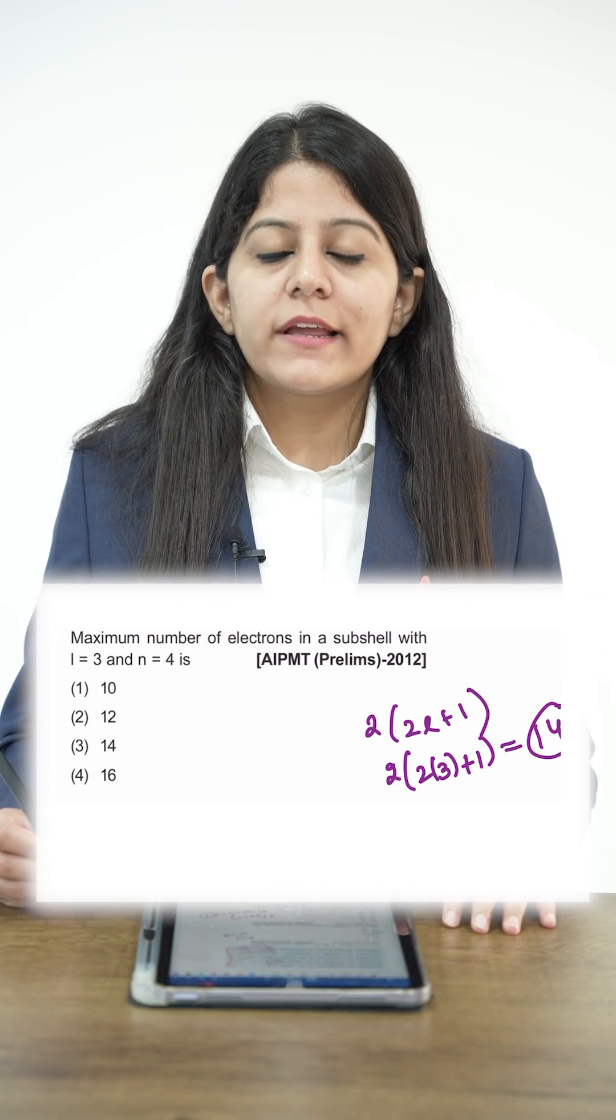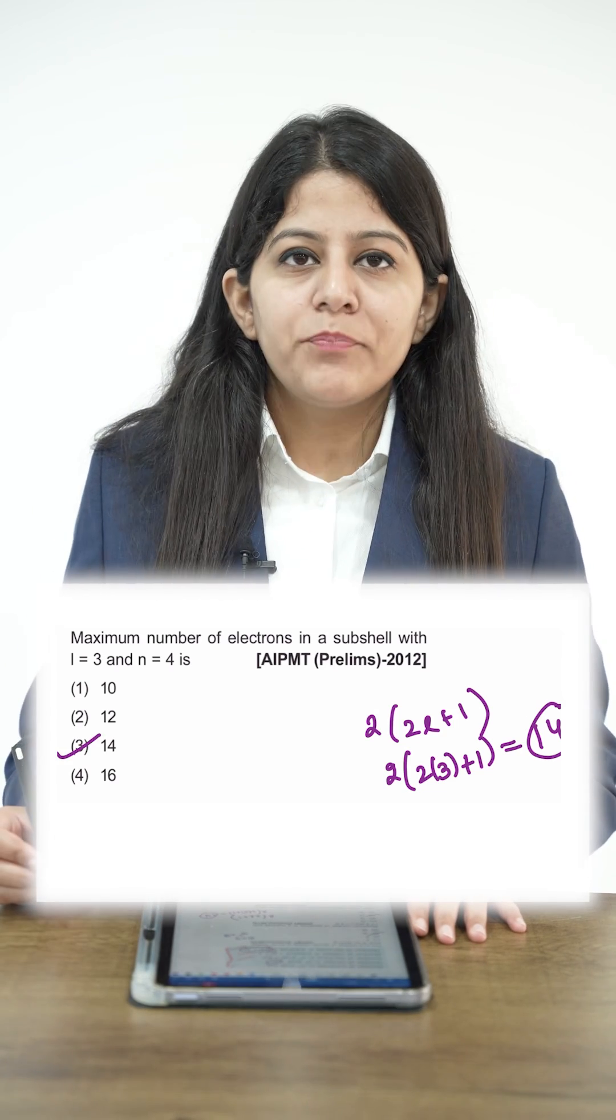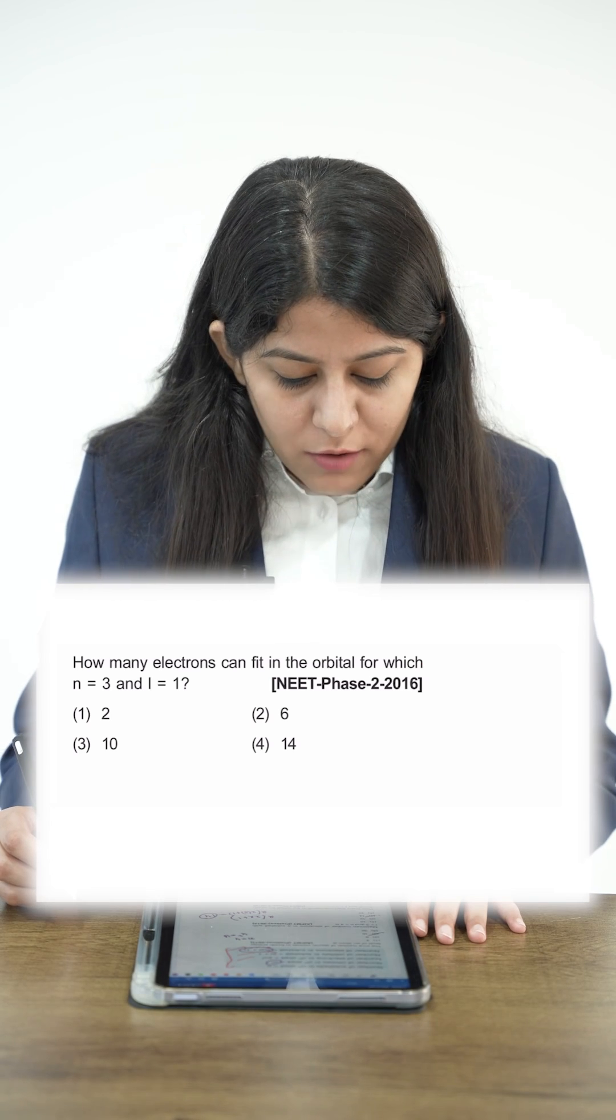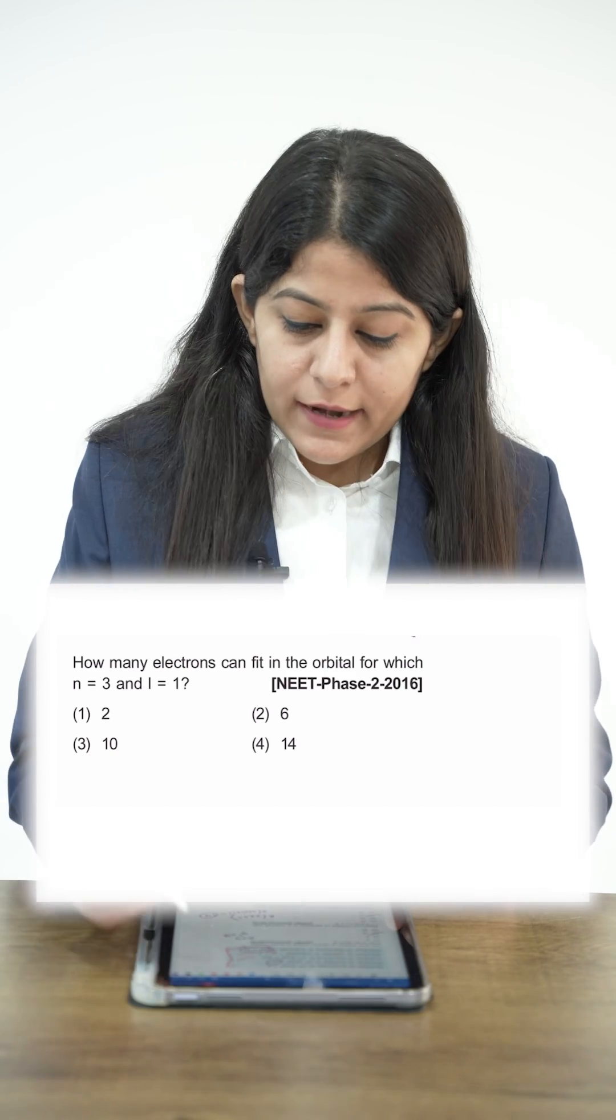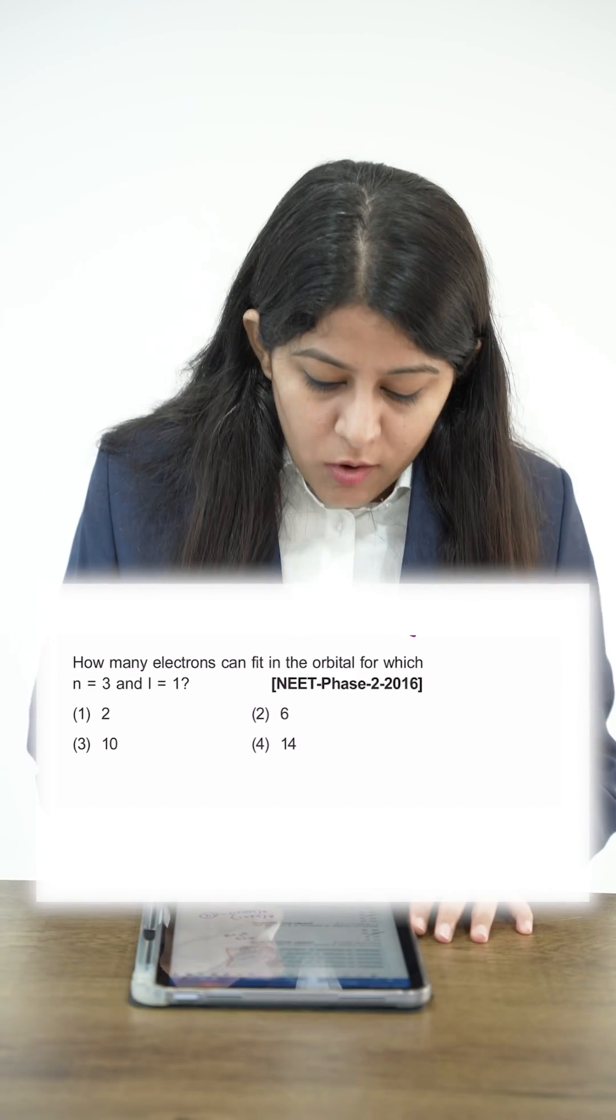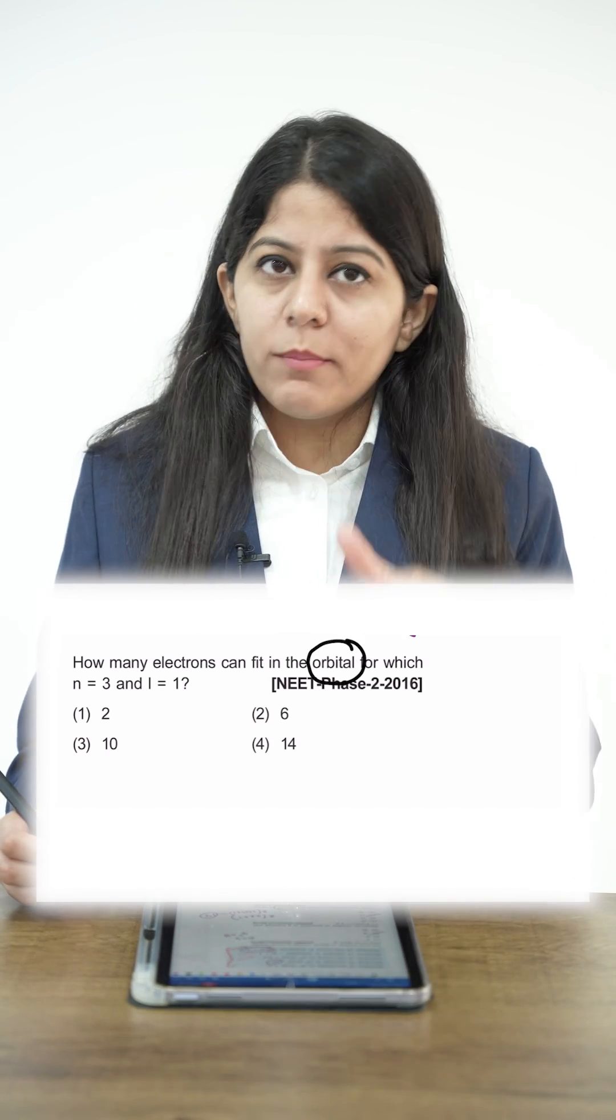Next question: how many electrons can fit in the orbital for which n=3 and l=1? This is a very important question. You have to focus on one word: 'orbital'. Whenever it's asked how many electrons can be in an orbital, an orbital can have a maximum of 2 electrons only.